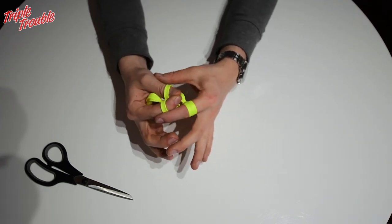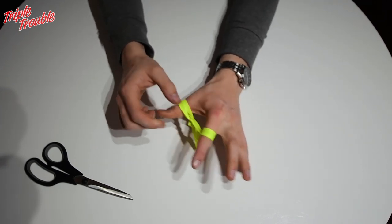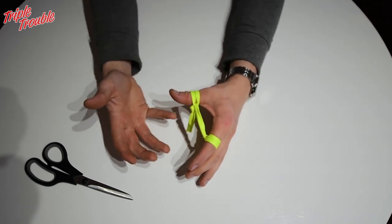So once again, index finger and thumb go through, slide it off onto your thumb. You have a loop. It's that easy.